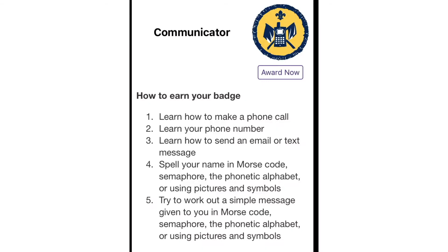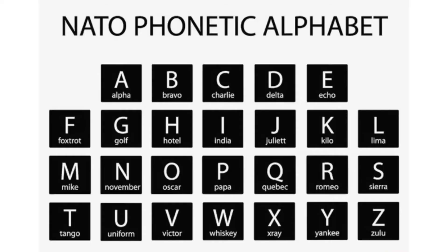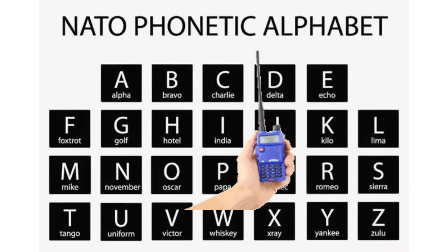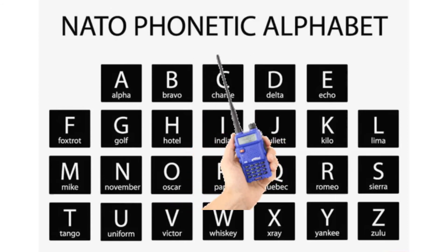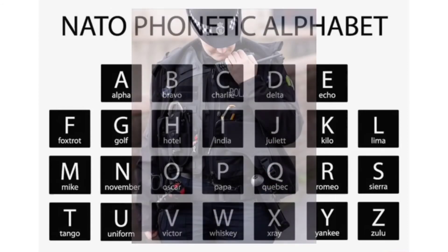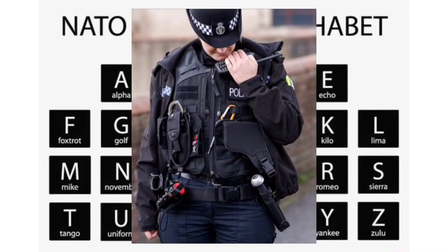Next we're going to have a look at the phonetic alphabet. This alphabet is used when using a phone, a radio, or a walkie-talkie to spell out words or letters. It can also be used as a call sign. The police use the phonetic alphabet when using their radio too.